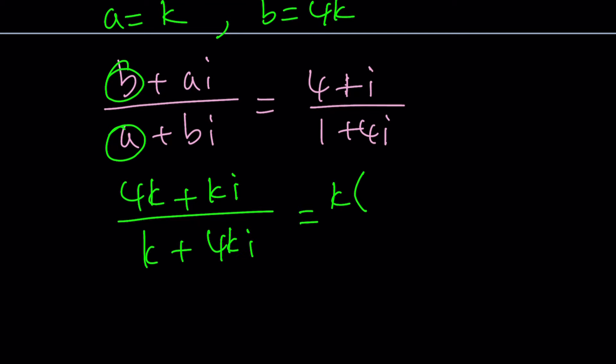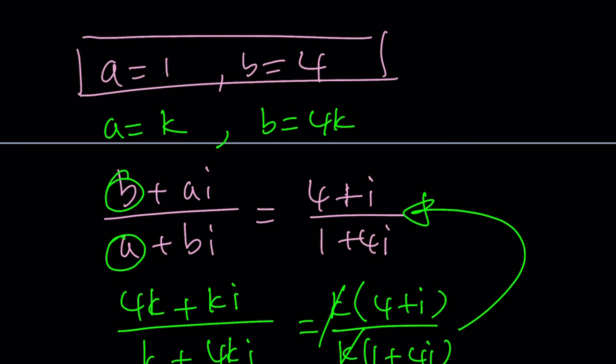Divided by A is K again, plus 4K. And if you factor out a K, you're going to get 4 plus I over 1 plus 4I, which is actually equal to this expression right here. So yes, that works.